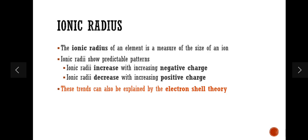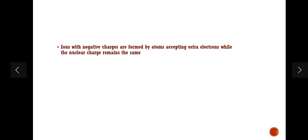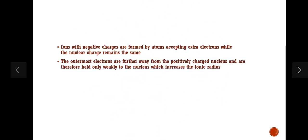Let's look at negative charges, where ionic radii are increasing. Ions with negative charges are formed by atoms accepting extra electrons while the nuclear charge remains the same. Whenever negatively charged ions are formed, they are accepting electrons, not donating. After that, the outermost electrons are further away from the positively charged nucleus and are therefore held only weakly to the nucleus, which increases the ionic radius.